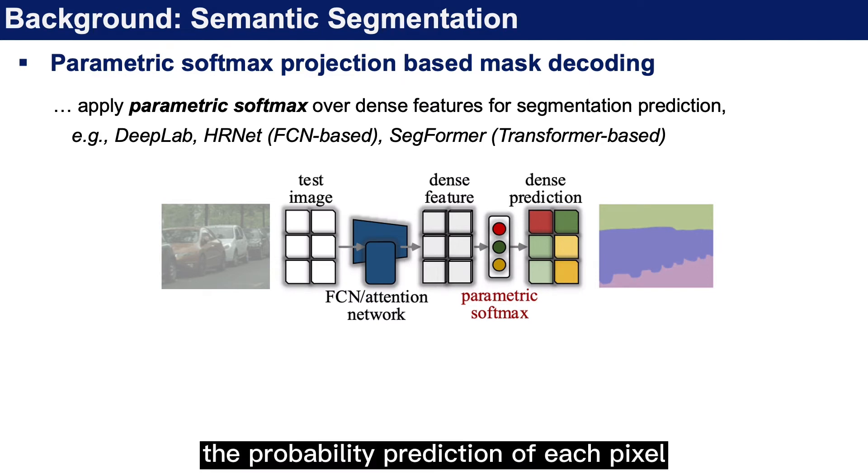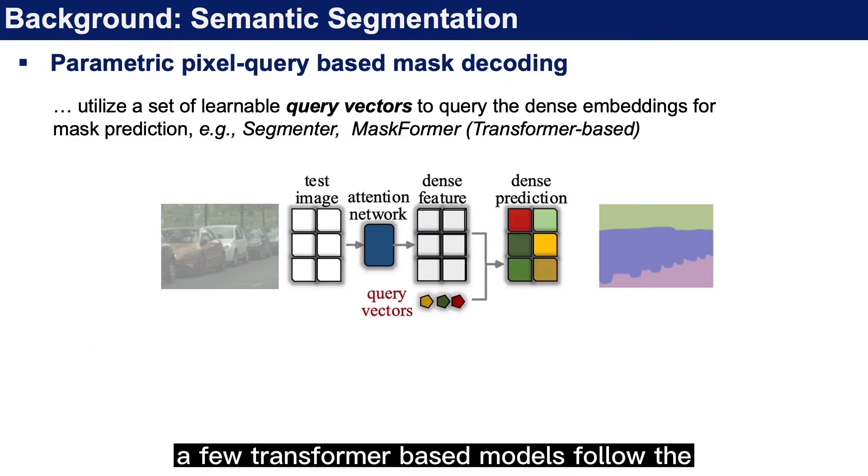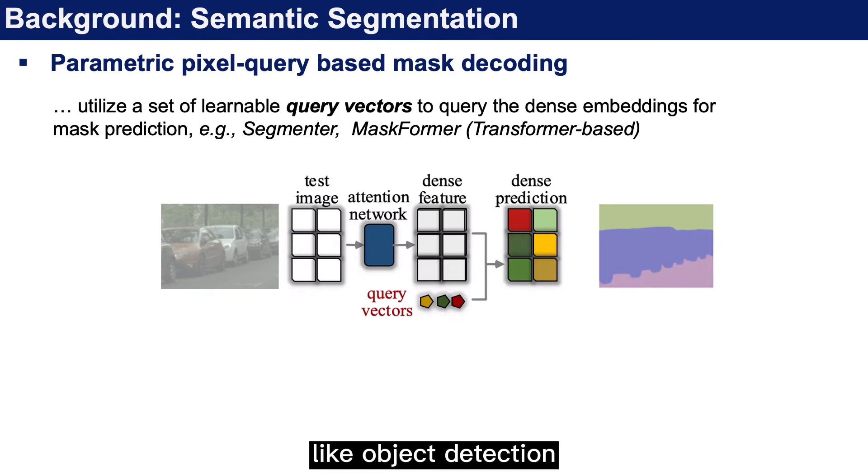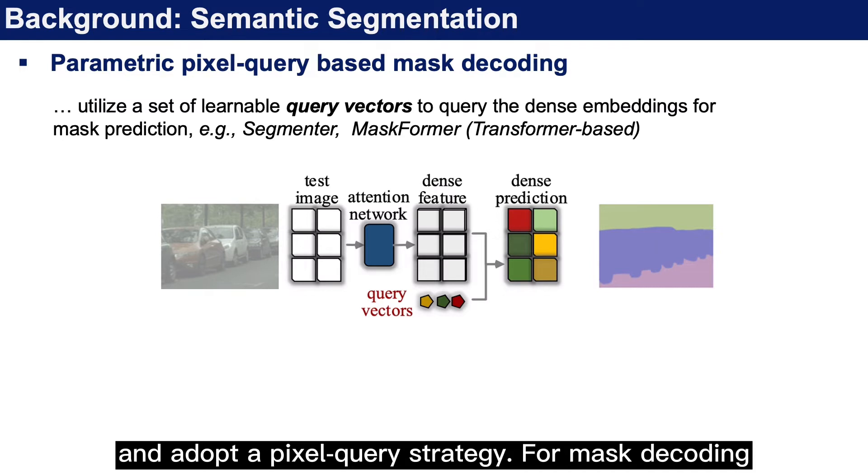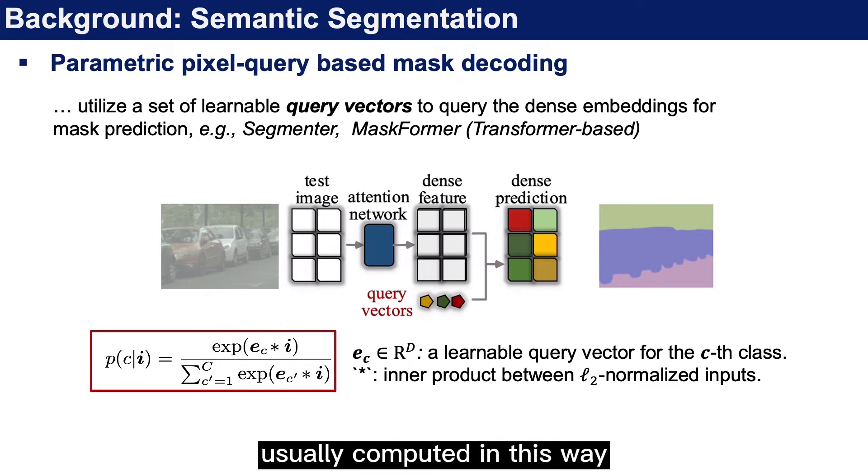The probability prediction of each pixel can be computed using an equation. A few transformer-based models follow the good practice of transformers in other fields like object detection and adopt a pixel query strategy for mask decoding. The probability distribution of each pixel is usually computed in this way.